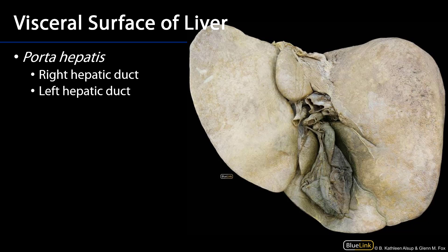Those intrahepatic ducts feed into the right or the left hepatic ducts. We can see the right hepatic duct and the left hepatic duct, and we can see just at the point where they're coalescing into the common hepatic duct.